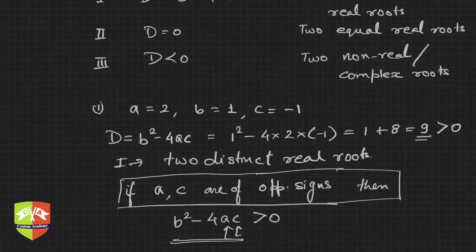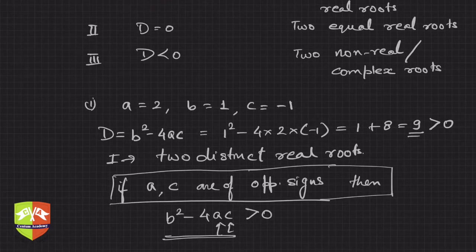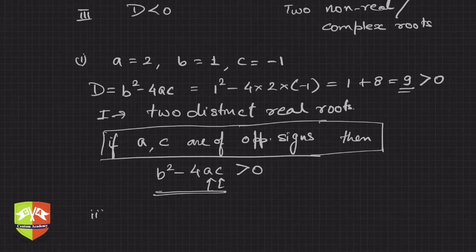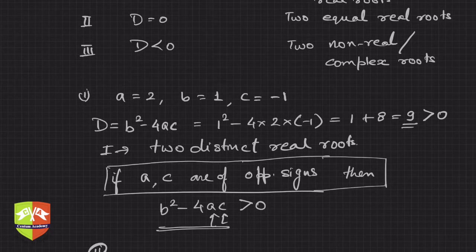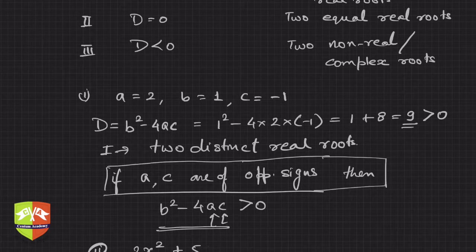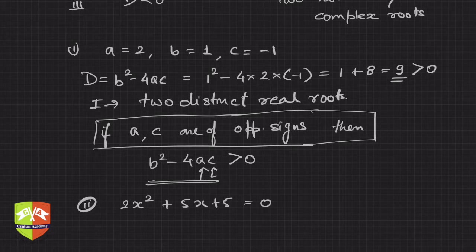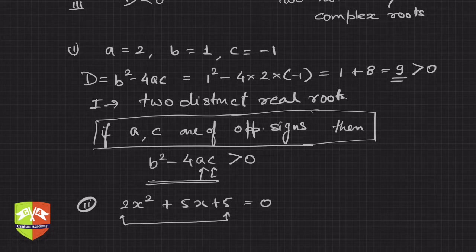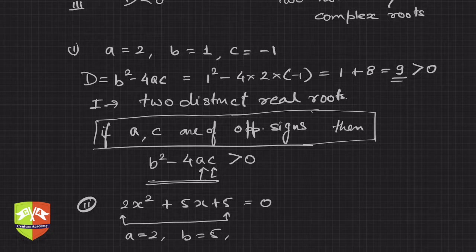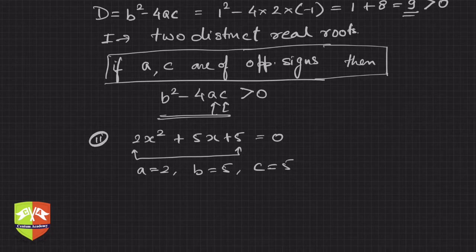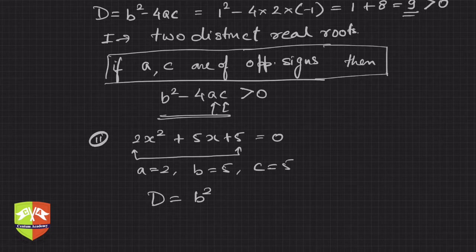Now let's go to the second question: 2x² + 5x + 5 = 0. Clearly, a and c are of the same sign here, so we need to check the discriminant. Here, a is 2, b is 5, and c is 5.